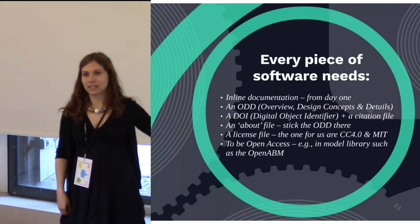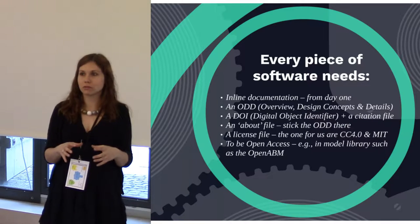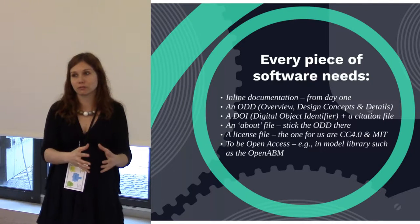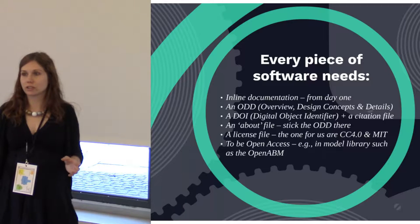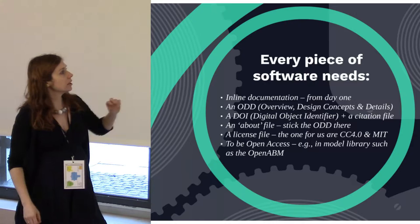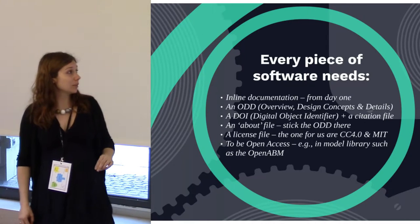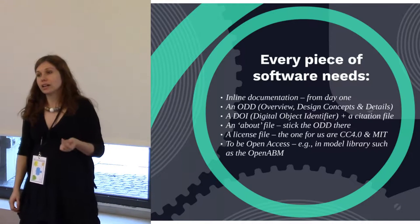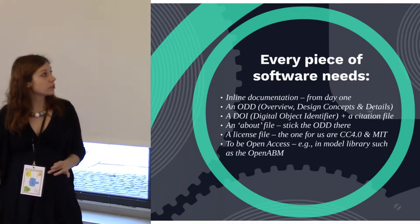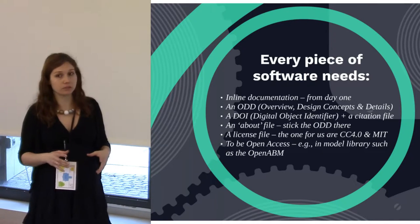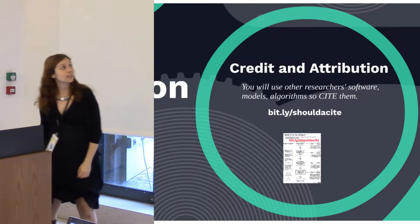It's really easy to get a DOI for things and you should get one for your simulation, because that makes it easy to cite. The simulation is a research output, just like a paper is a research output, and it's very important that we start thinking about people getting credit for those. At some point you may find yourself developing simulations for years and writing fewer papers, which puts you at a disadvantage. So get a DOI, add an about file, put the ODD there, add a license file — probably CC4.0 or MIT — for reuse with attribution. Make it open access, and ensure credit and attribution.